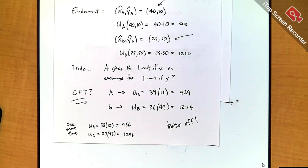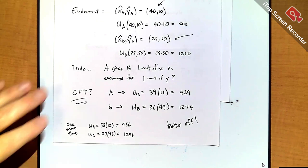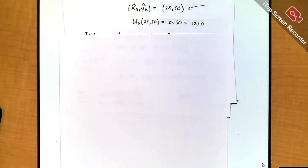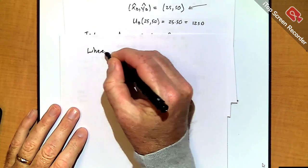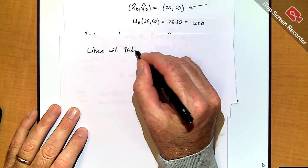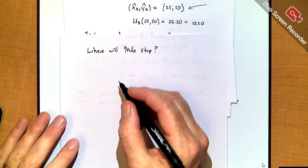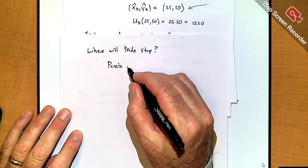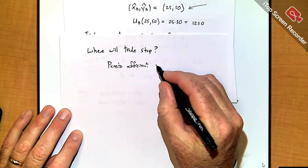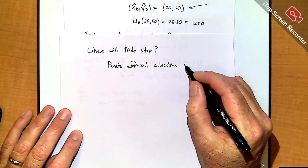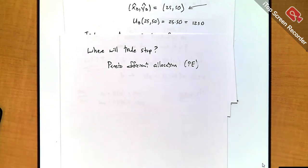The definition of a Pareto efficient allocation is: in order to make someone better off, you have to make someone else worse off. It's efficient because it's the opposite of what's been going on here. So what I'm trying to get at is where will trade stop — and it turns out it will stop at a Pareto efficient allocation. We don't have to do this repetitive one-X or one-Y thing; I'll show you how to find them properly.